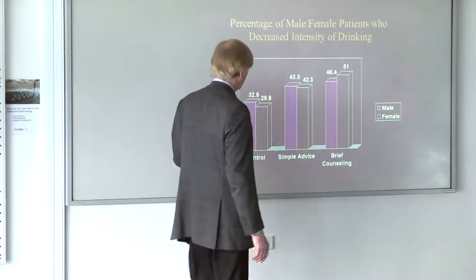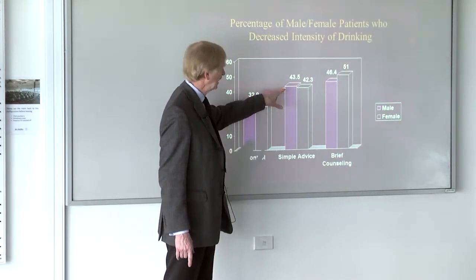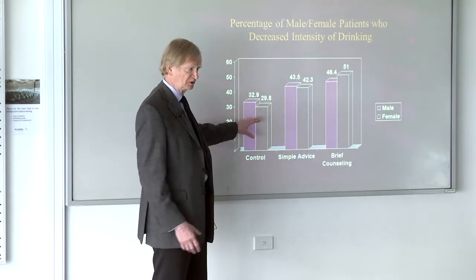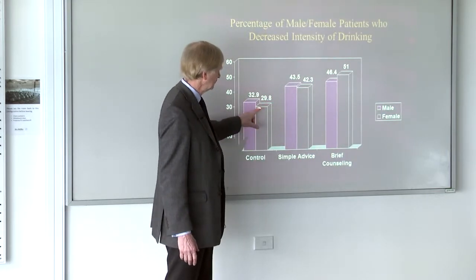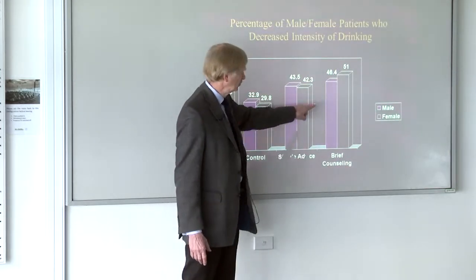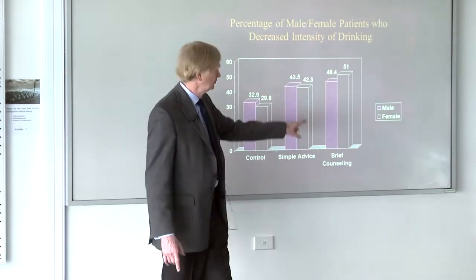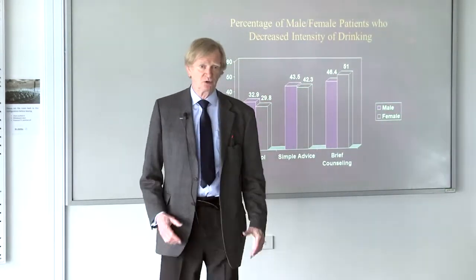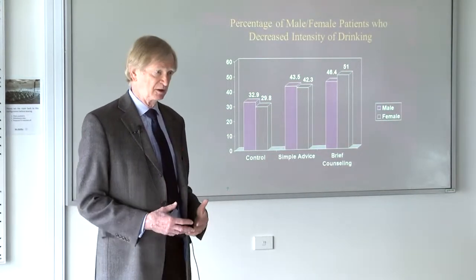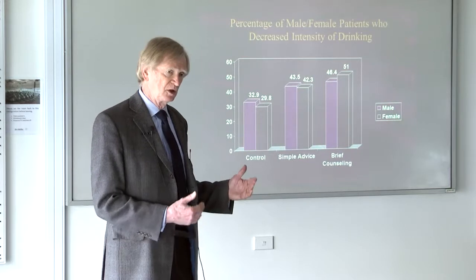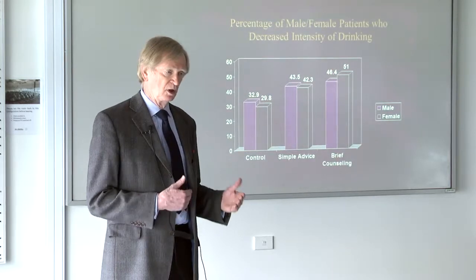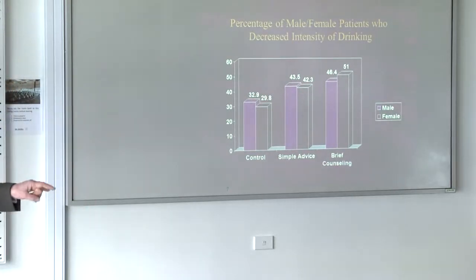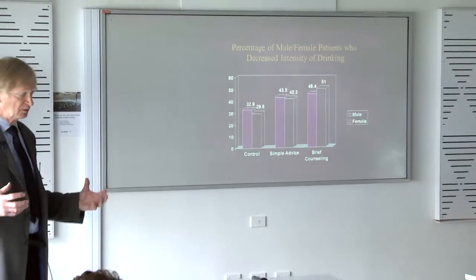Six months later there were significant reductions in hazardous drinking. The control group changed a little, but there were significant differences between the simple advice group and the control group, and between the brief counseling group and control. Notably, there were no significant differences between the simple advice and brief counseling groups — suggesting that if you're going to intervene, you don't have to spend a lot of time. It's probably better to see more patients with a quick intervention. Just a few minutes of discussion is likely to work with 20 to 25 percent of heavy or binge drinkers.